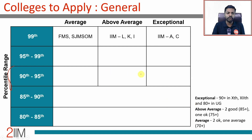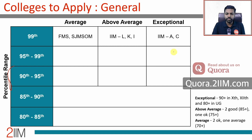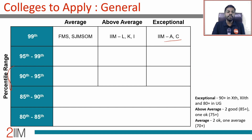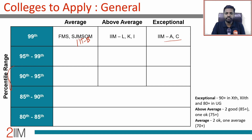The first category is IIM Ahmedabad and Kolkata — for the exceptional academic profile, north of 99 percentile. In practice, that means 99.6 or 99.7 plus. In this range, people who have got north of 99 with 99.6 can think about IIM C and L, probably around 99.3 or 99.4. FMS and SJMSOM — which is Sydenham Institute, i.e., IIT Bombay — tentatively around 99 to 99.2. All of these require percentiles north of 99.